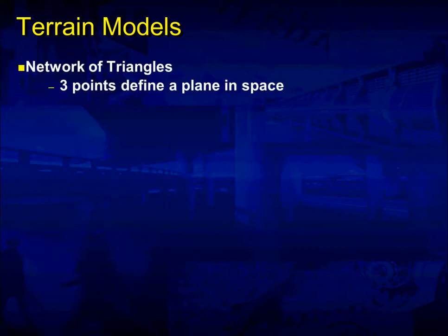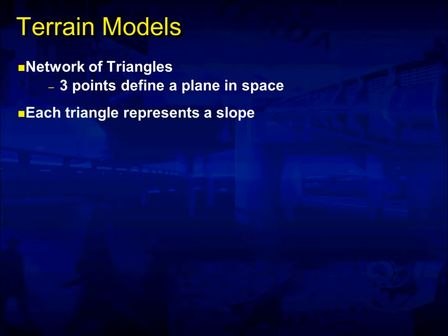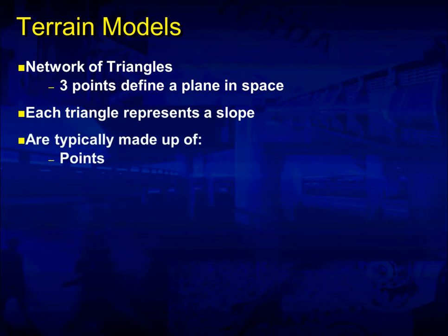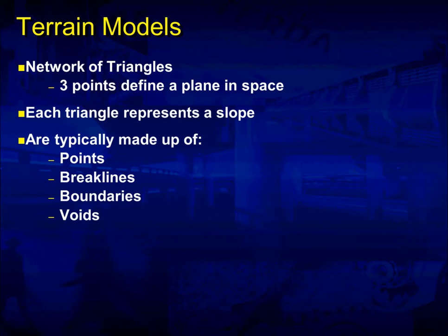Terrain models are basically a network of triangles. Three points define a plane in space. Each triangle represents a slope and typically are made up of points, break lines, boundaries, and voids. There are other things that can be used to create a terrain model — we're just listing the four main ones there.